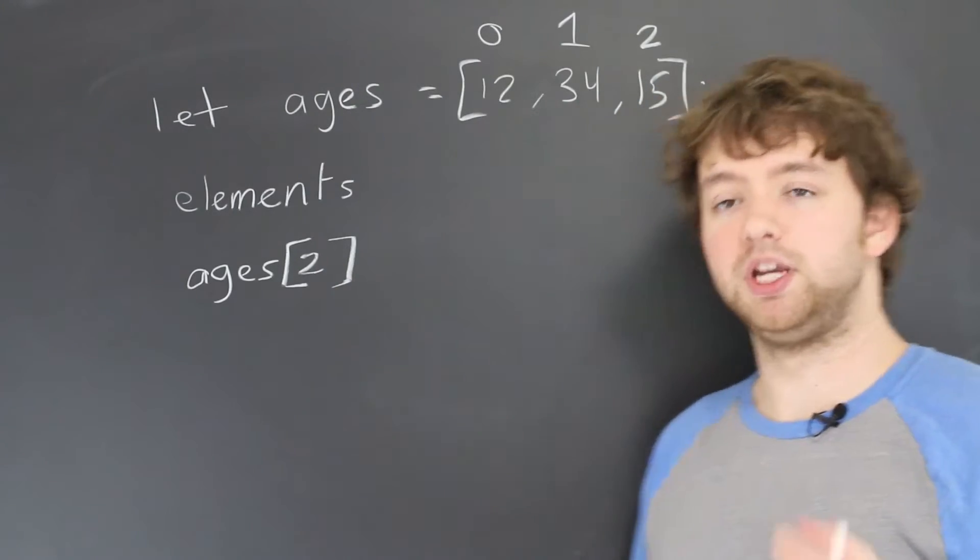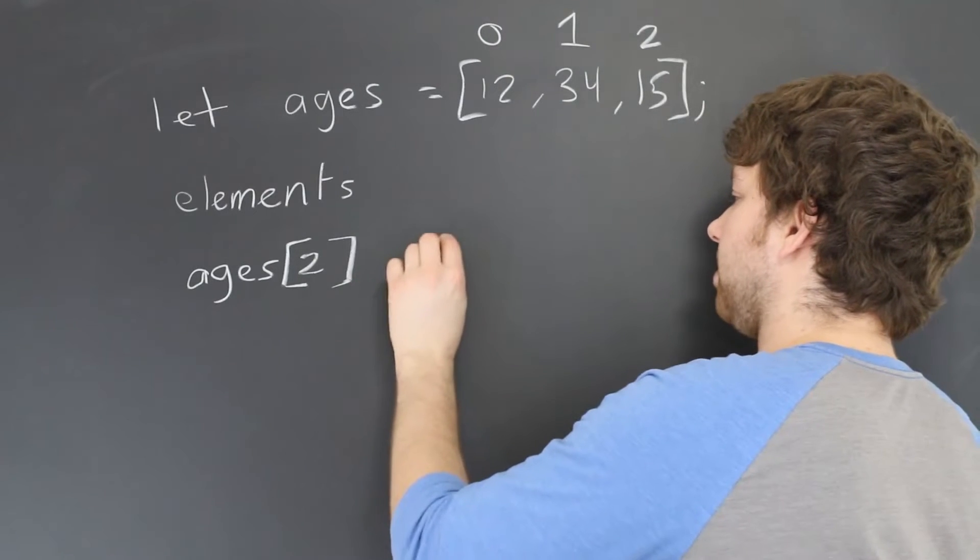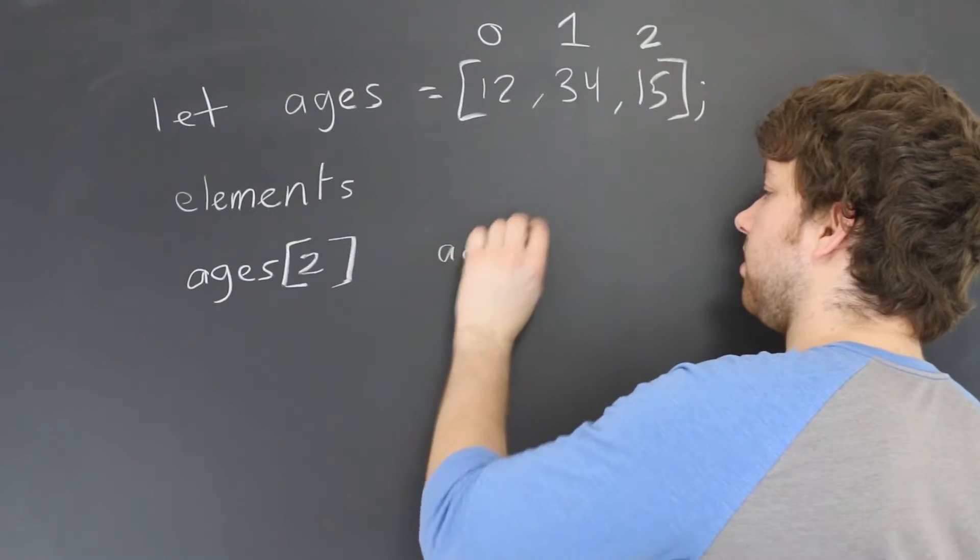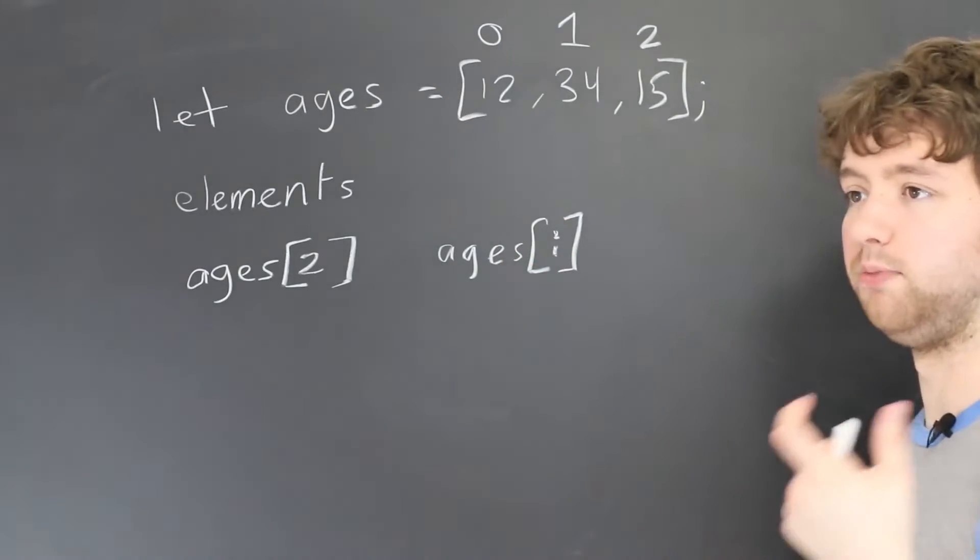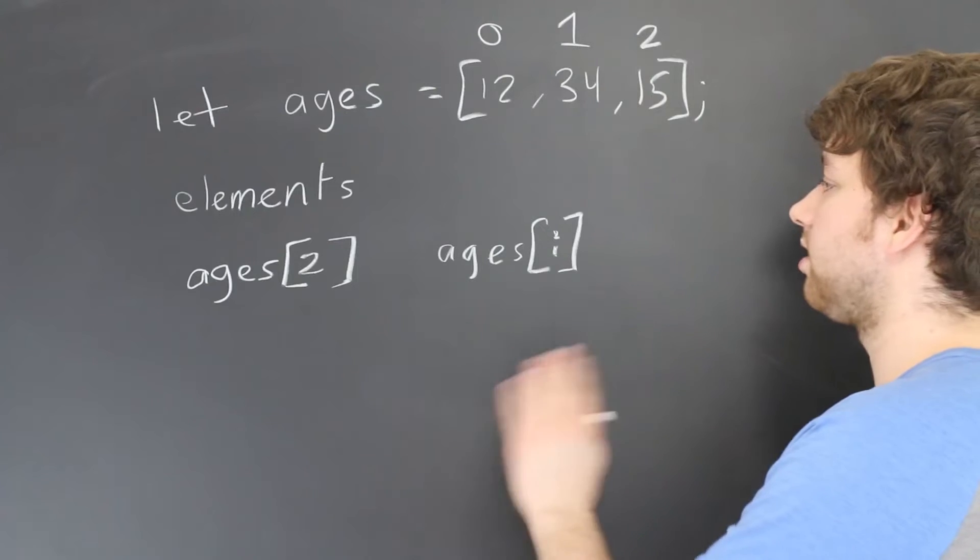That's going to come up a lot especially when we're talking about loops, because you can use a variable in here. For example, you could do something like ages[i], and that i can come from a for loop. There's a lot of stuff you can do with the indexes.